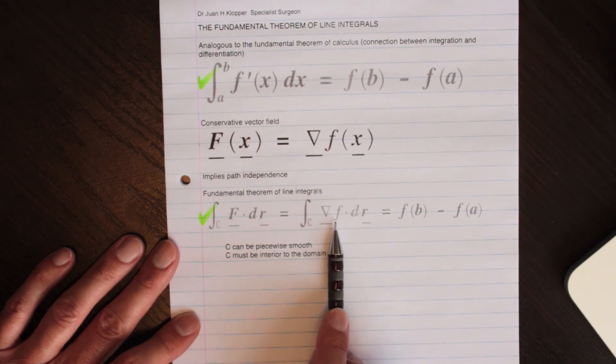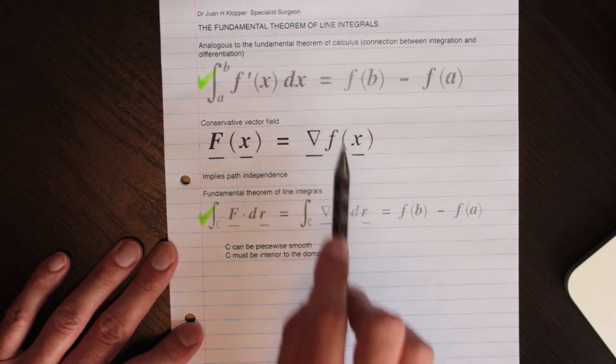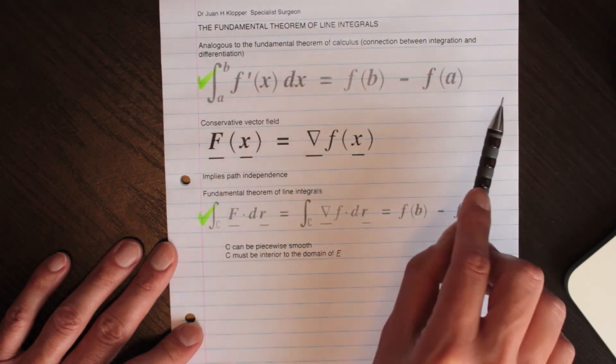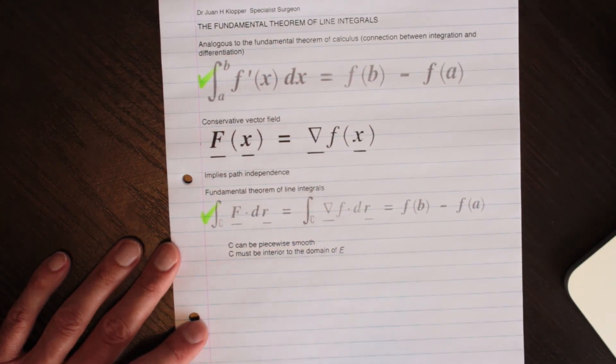So if indeed this is true, it makes this a conservative vector field, and that implies that in its path, there's path independence, no matter what path particle takes to get this line integral, which for now for us denotes work.